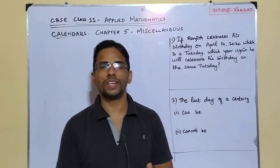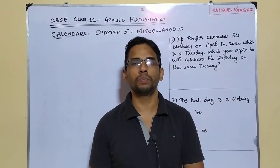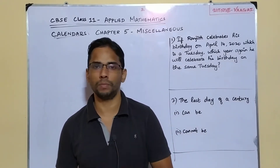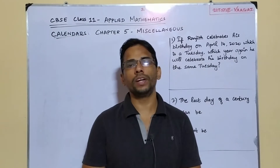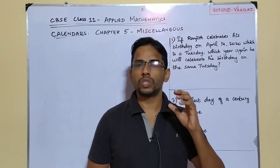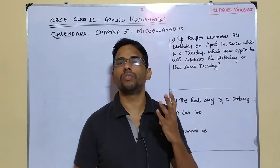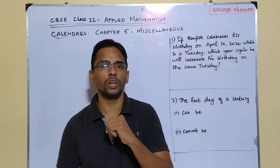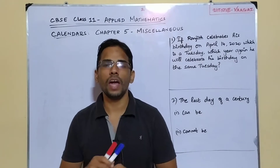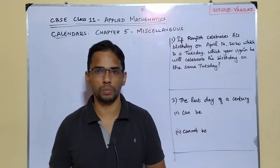Welcome back to our channel Vagai Academy of Mathematics. This playlist is for Class 11 CBSE Applied Mathematics. We have already started the topic of Calendars, and out of five chapters, we have completed the first four. This session is going to be the last chapter, Chapter 5, where we are going to work some miscellaneous problems.